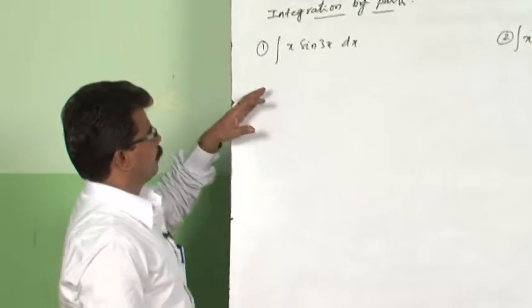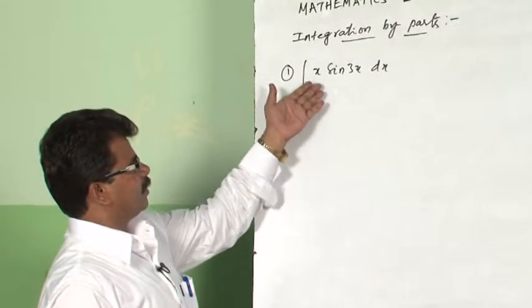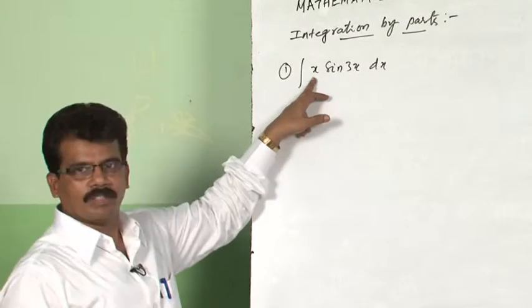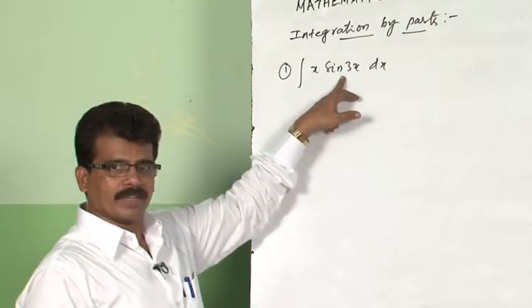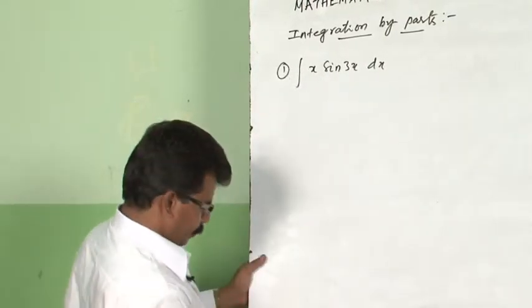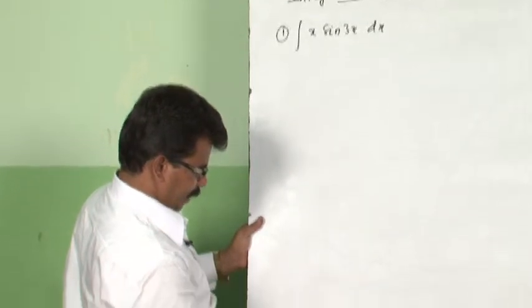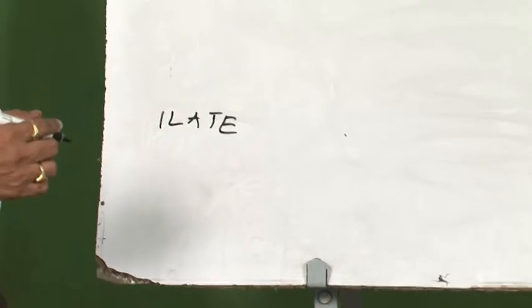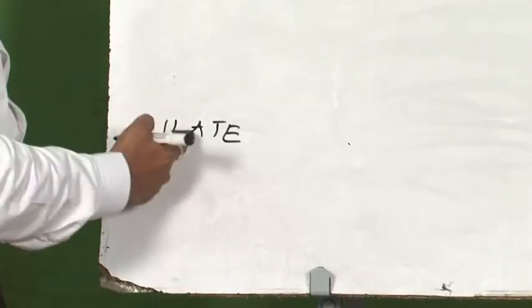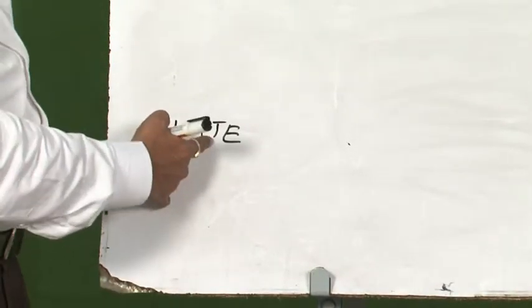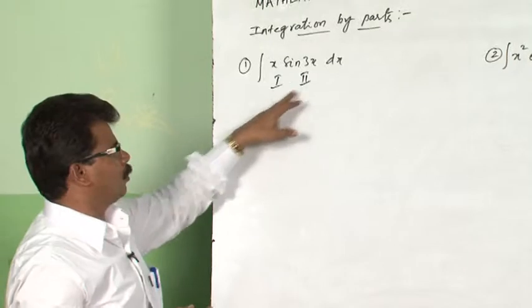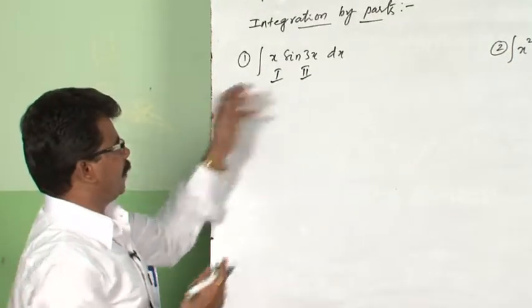Observe the first question: ∫x sin3x dx. The integrand has two functions — x is an algebraic function and sin3x is a trigonometric function. Let us check if it follows ILATE: A comes before T, so yes it does. Therefore x is the first function and sin3x is the second function. Now let us apply the formula.